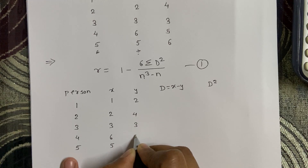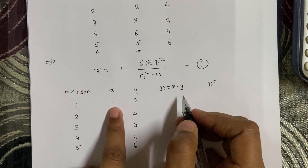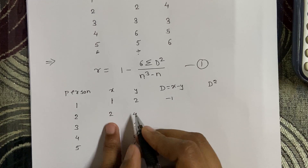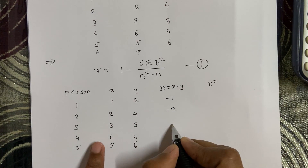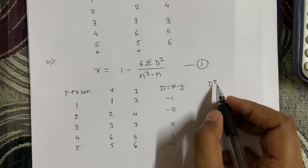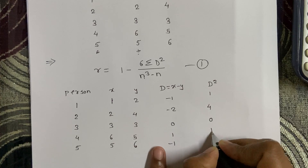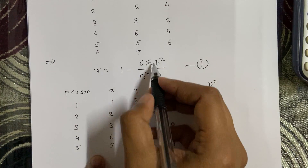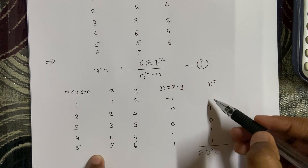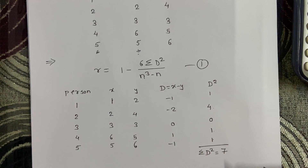The y values are 2, 4, 3, 5, and 6. Now calculate the d value where d equals x minus y. So: 1 minus 2 is minus 1; 2 minus 4 is minus 2; 3 minus 3 is 0; 6 minus 5 is 1; and 5 minus 6 is minus 1. Now square these values: minus 1 squared is 1; minus 2 squared is 4; 0 squared is 0; 1 squared is 1; minus 1 squared is 1. The summation of d squared is 1 plus 4 plus 0 plus 1 plus 1, which equals 7.